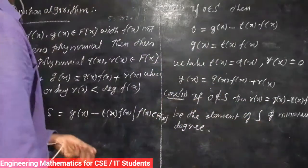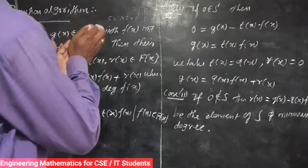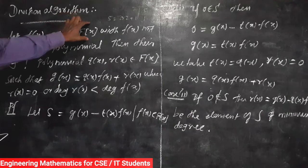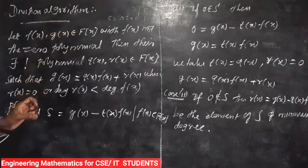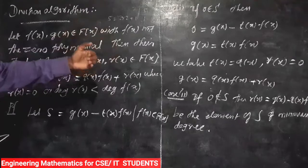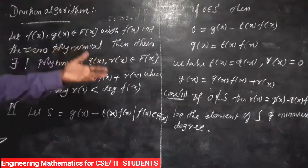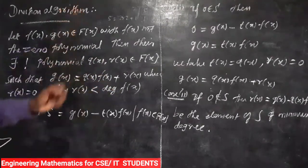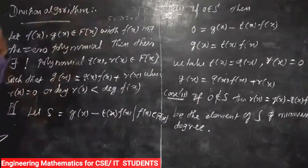How do we see the division algorithm in polynomial rings? Let f(x) and g(x) belong to the polynomial ring F[x]. These are polynomials, and g(x) is a non-zero polynomial. A constant is also considered a non-zero polynomial — for example, a constant a₀ is a constant polynomial.